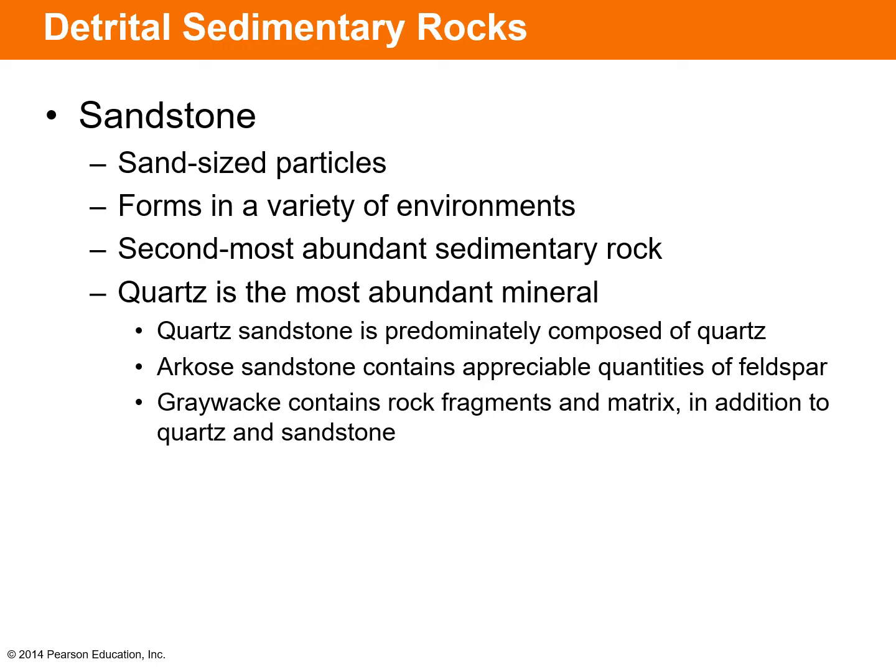Another really important type of detrital sedimentary rock is sandstone, made of sand-sized particles. Sandstone can form in a variety of environments and is the second most abundant sedimentary rock. Quartz is the most abundant mineral in sandstones, giving us quartz sandstone. Arkose sandstone contains a fair amount of feldspar in addition to quartz, and graywacke sandstone contains rock fragments and matrix in addition to quartz.